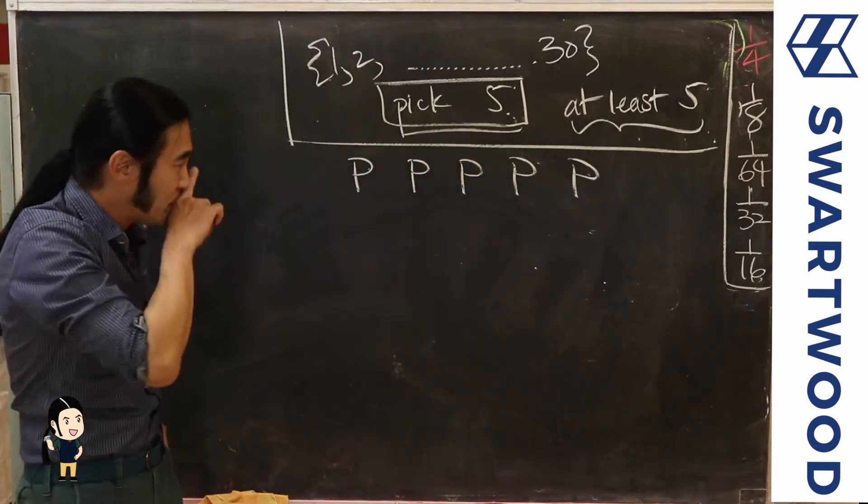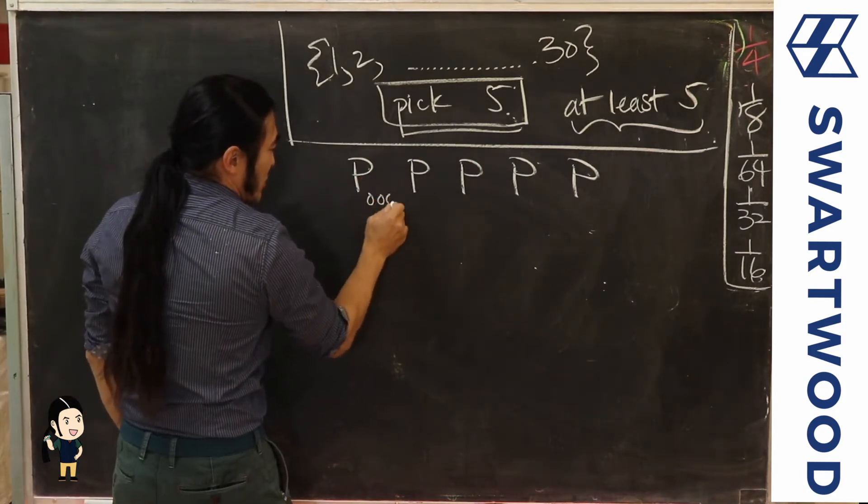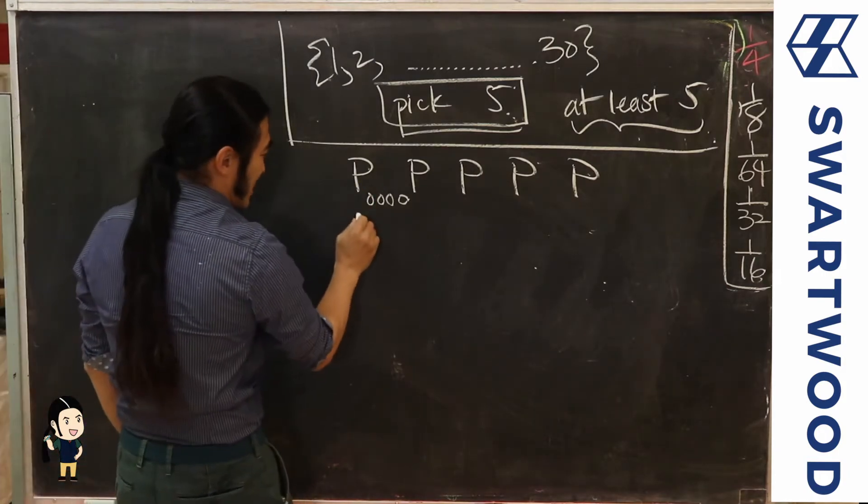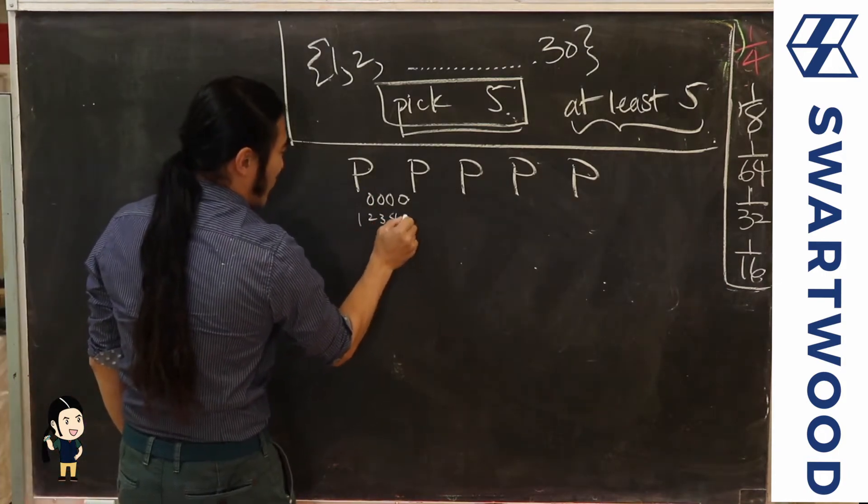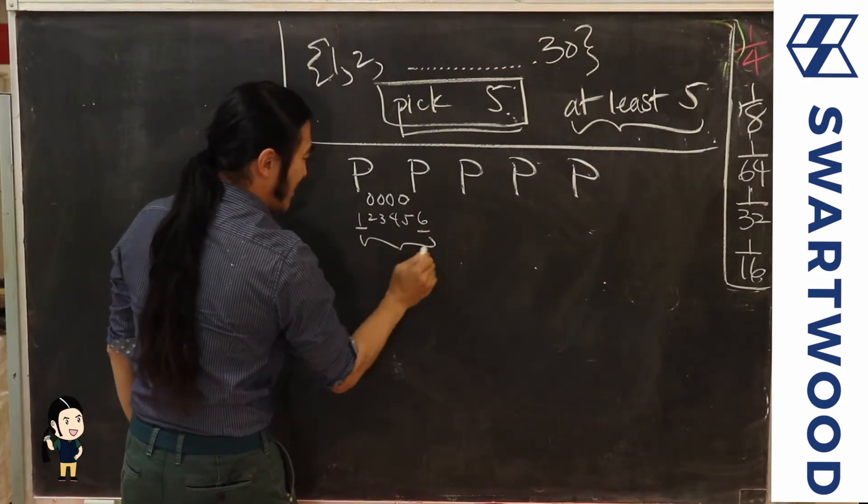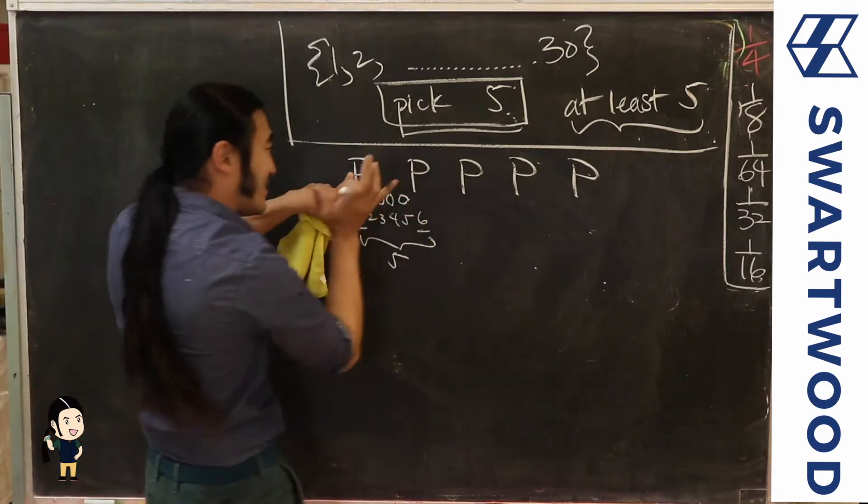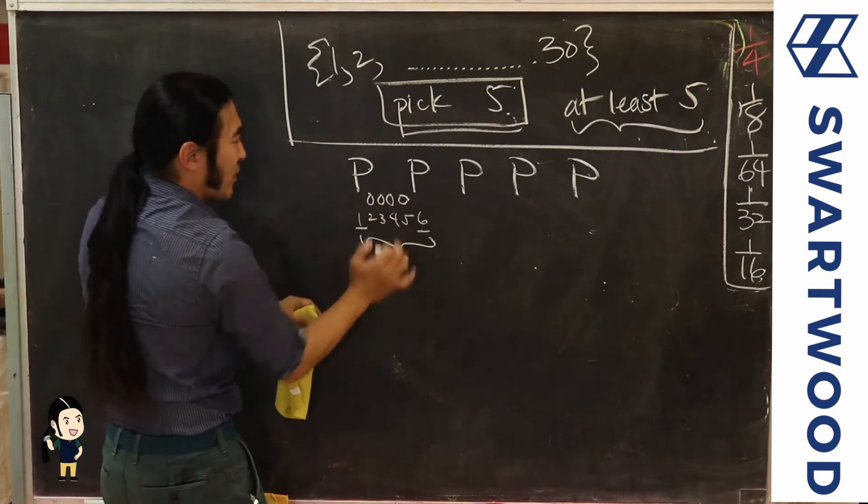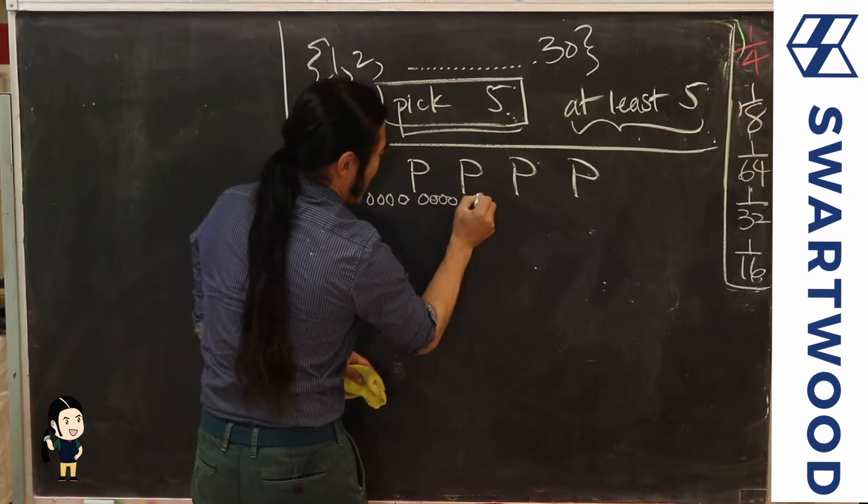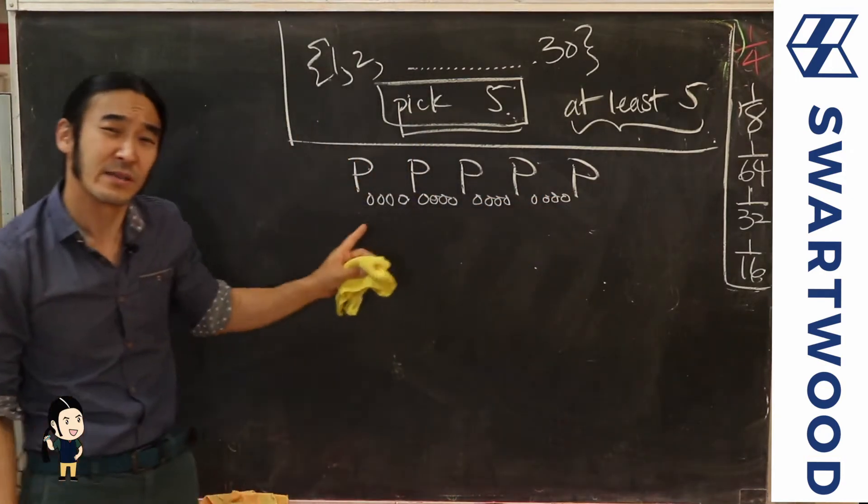We need at least a difference of five, which means that between this guy and this guy there are one two three four guys that we're not picking. For example, if this is number one two three four five six, then the difference between one and six would definitely be five. In order for these two guys to be at least five apart, you need to have four guys between them. I'm going to force that right here, right here, right here.